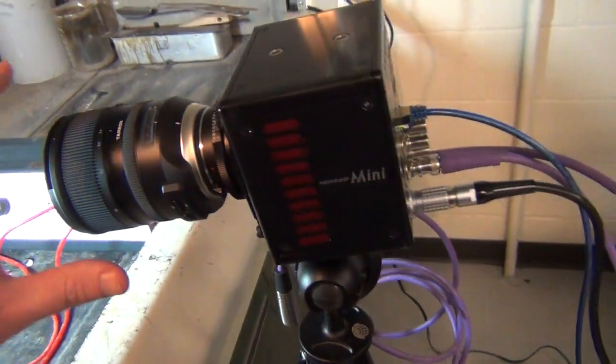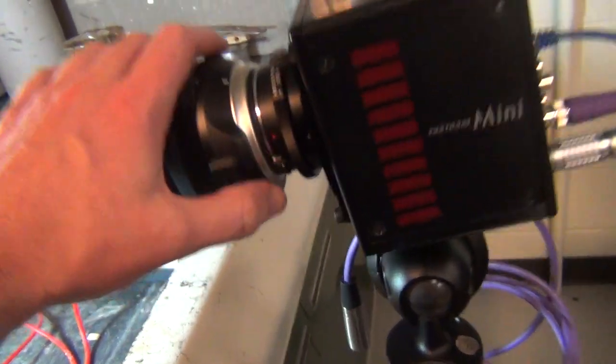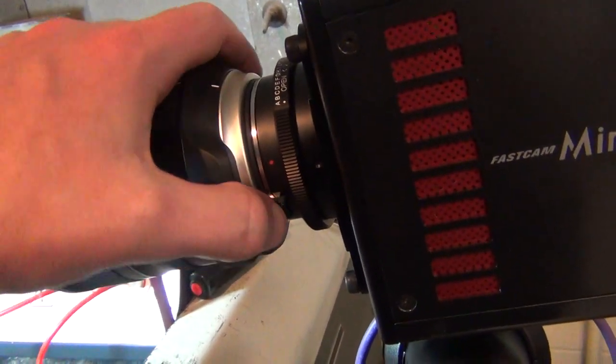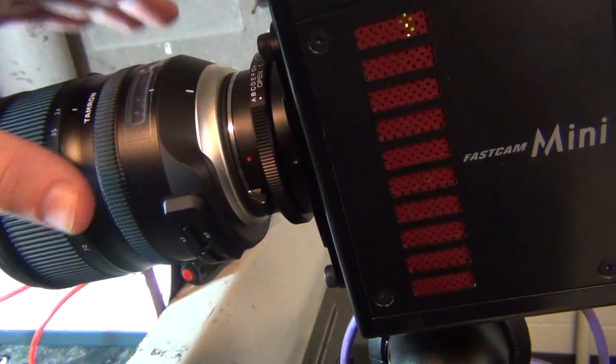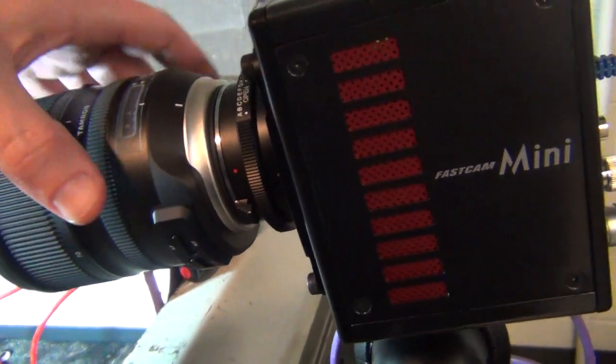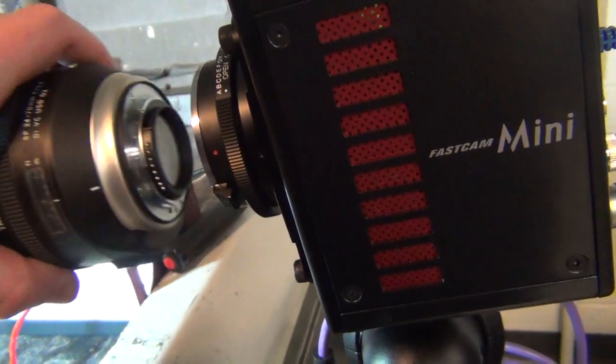Now to remove the lens we will push this button, this short tab here, and rotate the lens towards me. I'll rotate here and it will come off.